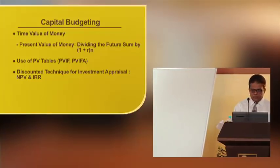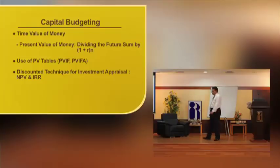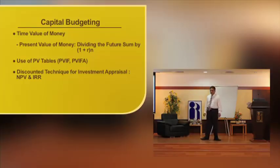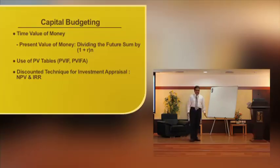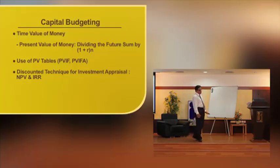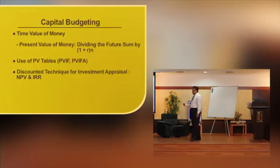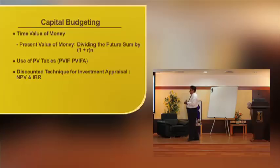Then we come to the important concept of present values. What exactly is a capital budgeting proposal? A company will always go in for expansion, diversification, etc., for which they need to invest large amounts of capital in buying machinery. That machinery purchase is a capital expenditure. The benefits of the machine will be felt over a period of time — some machines may be useful for more than 15 years — giving benefits for the next 10 to 15 years.